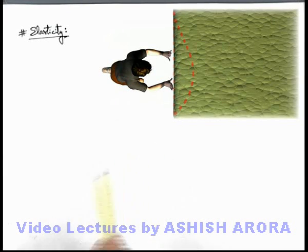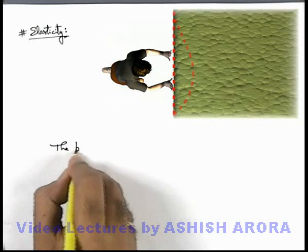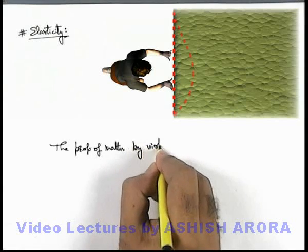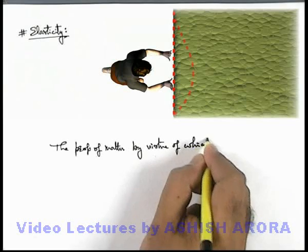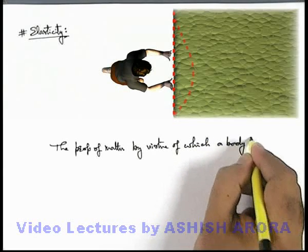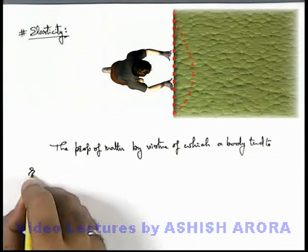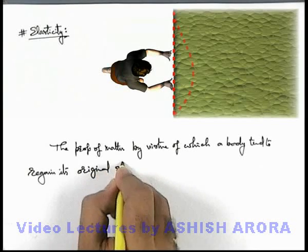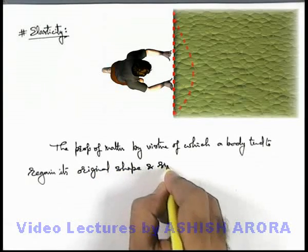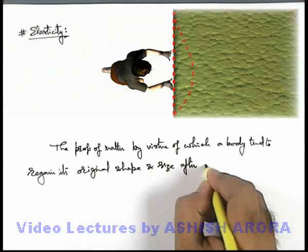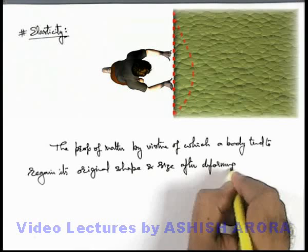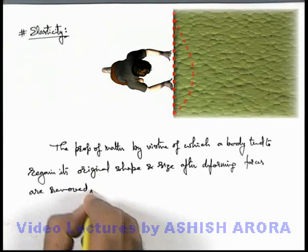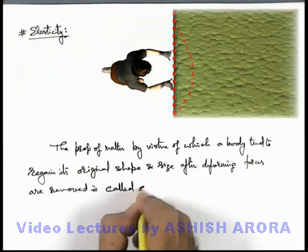Now in this situation, we can simply write that: the property of matter by virtue of which a body tends to regain its original shape and size after its deforming forces are removed is called elasticity.